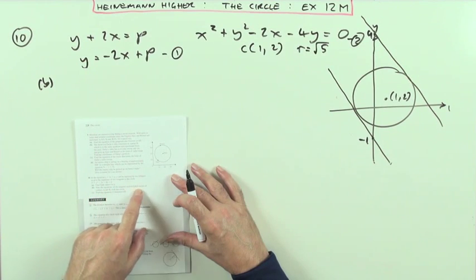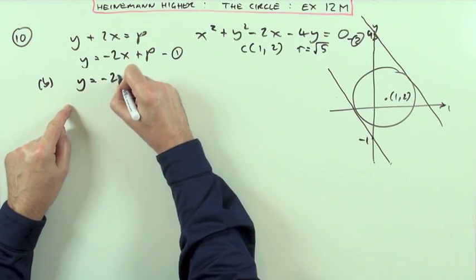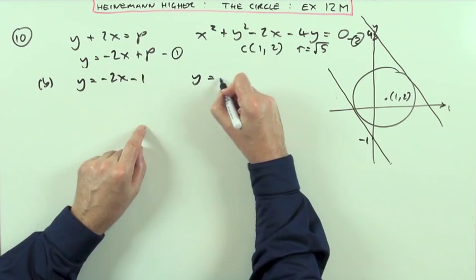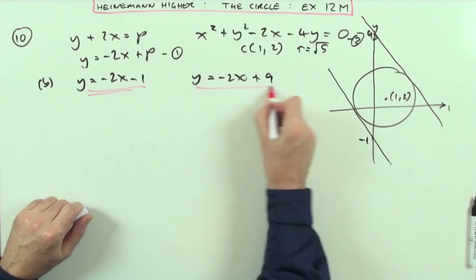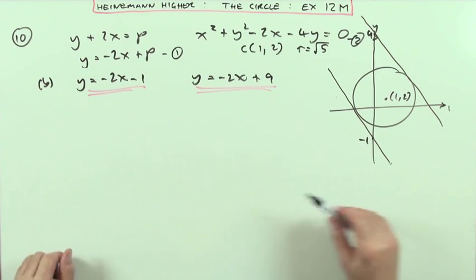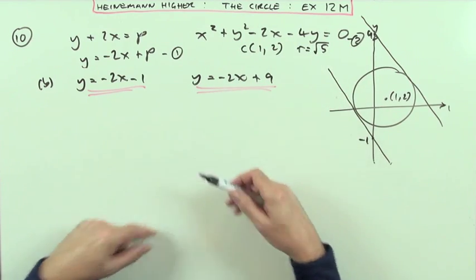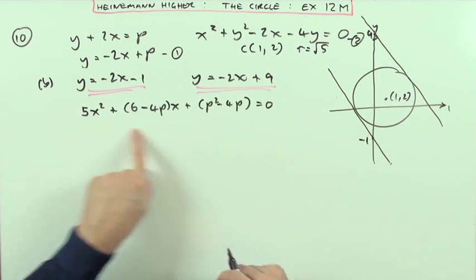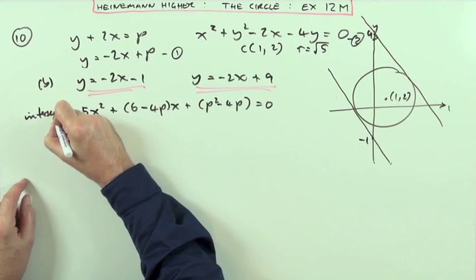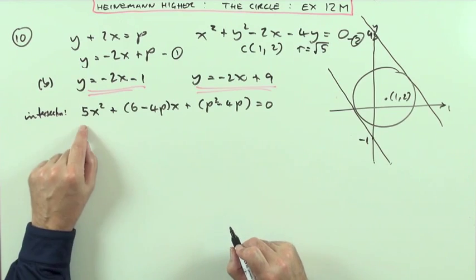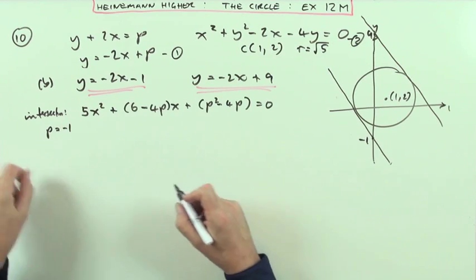Now, part b says, take the equation of the tangents and find the points of contact. Well, the tangents were y equals negative 2x minus 1 and y equals negative 2x plus 9. There's the two equations of the tangents. Now, for the points of contact, I'll have to substitute them back into that equation, this equation here. But I've already done that. I had that in that earlier part, so I'll put it back down here. That's the equation I had earlier. That was the equation for the intersections.